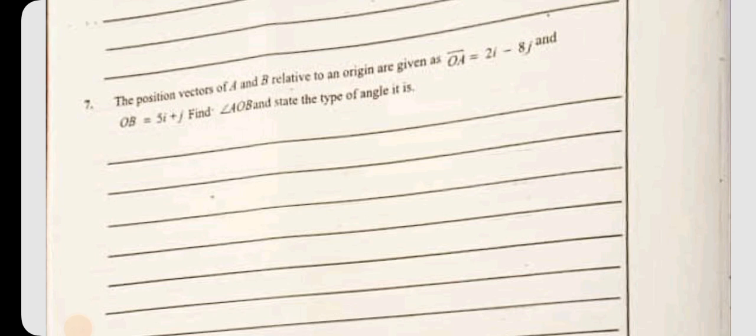Question 7. The position vectors of A and B relative to an origin are given as OA equals 2i minus 8j and OB equals 5i plus j. Find angle AOB and state the type of angle it is.